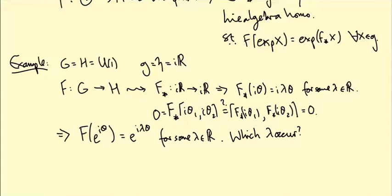Well not all of them. In order for this to be a well-defined map, e to the i two pi, which equals one, had better go to the same place that one goes to, and one is e to the i zero that goes to e to the i zero.